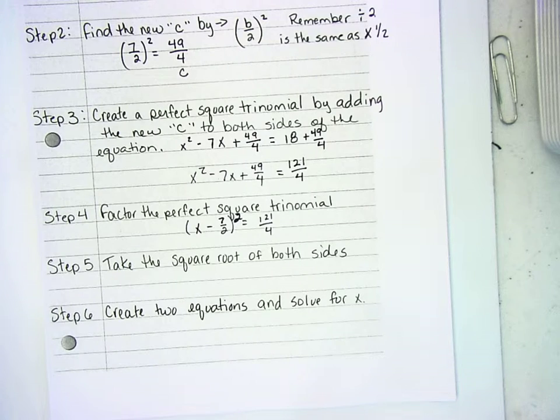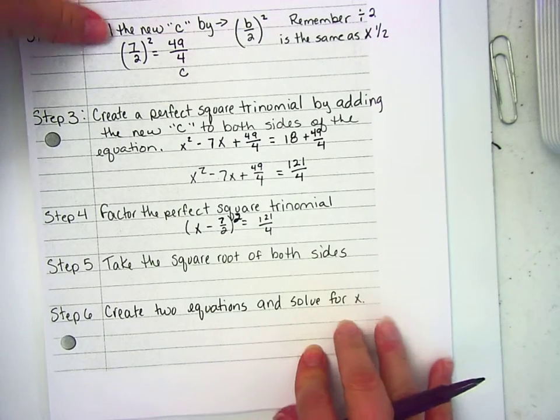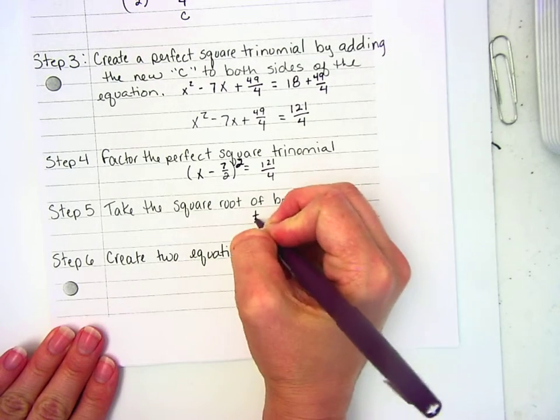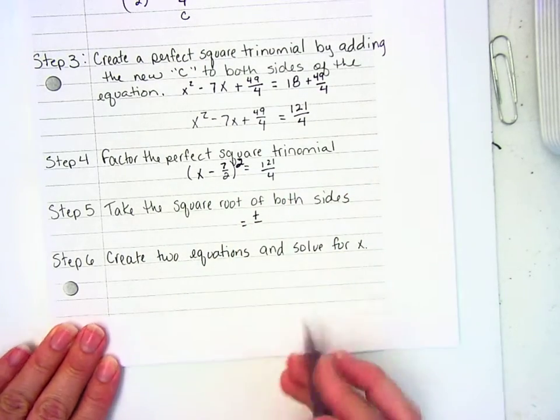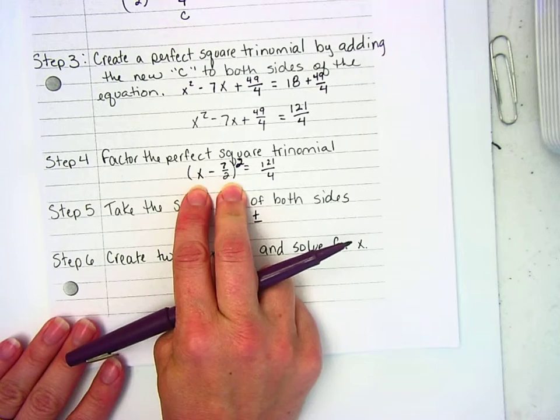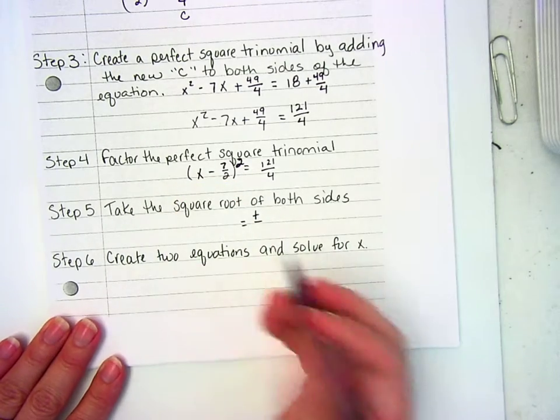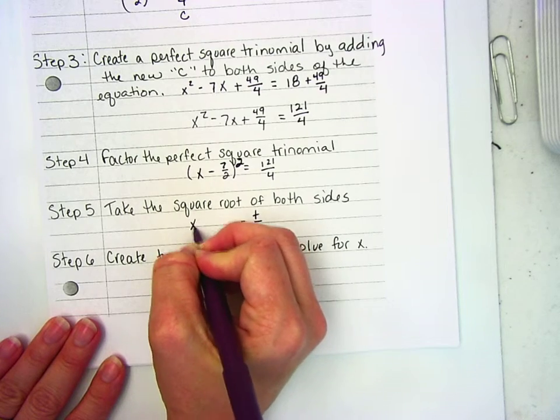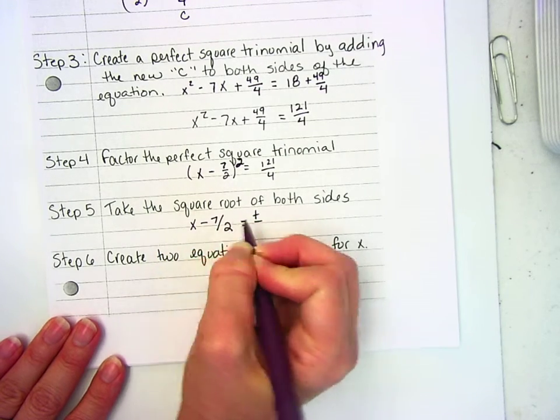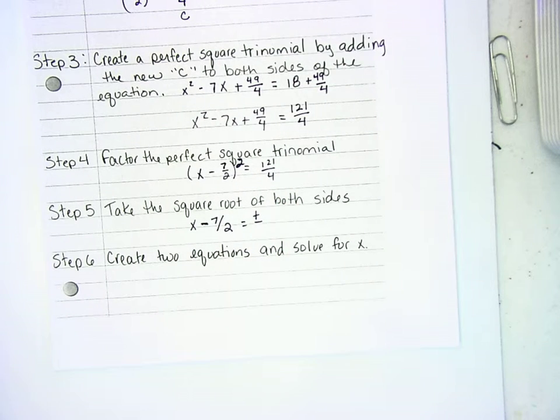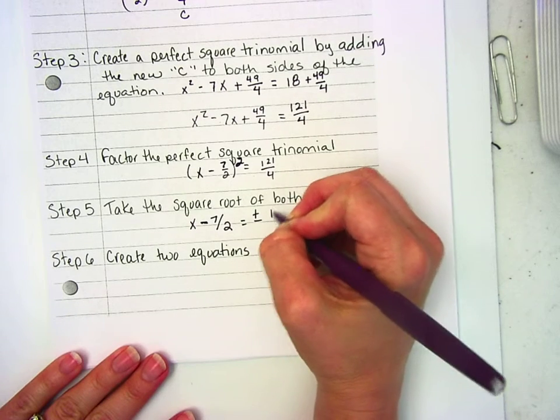Next step is take the square root of both sides. Be careful in this one, this is where you end up with that plus minus situation. x - 7/2 squared, if I square root it, I just get what's inside there. That gives me x - 7/2. And then if I square root 121/4, what's the square root of 121? 11/2.